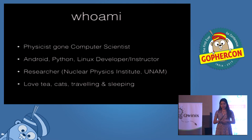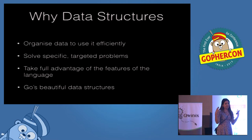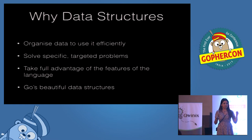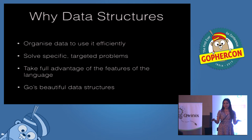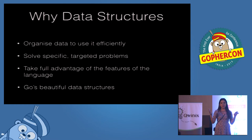I love tea, cats, traveling, and sleeping. So first of all, why data structures? In my case, as a non-computer scientist by origin, it's very easy to forget about data structures when developing anything — whether a small program, a small script, or distributed computing. Data structures are important because they help you keep your code organized, solve specific and targeted problems, and take full advantage of the language. In Go we have beautiful data structures that should be taken advantage of, and they are not strictly equivalent to other languages like Ruby or Java.